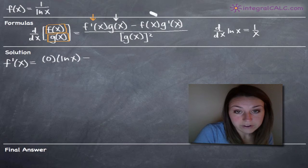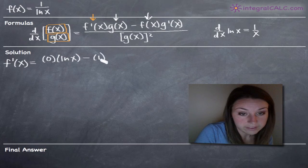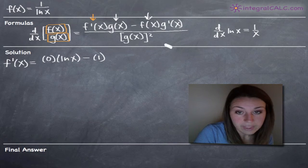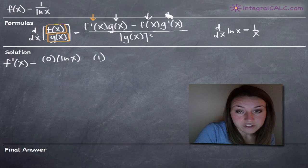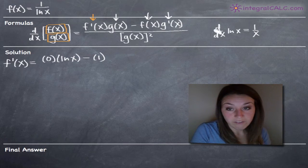Then we subtract and we write in f of x which is our numerator exactly as it is, which is 1. And then we multiply that by the derivative of our denominator.